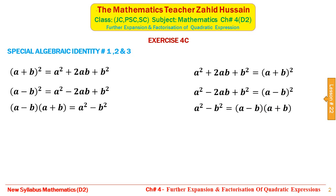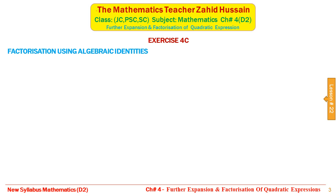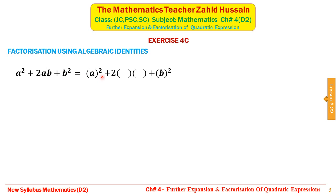For factorization using the first algebraic identity: given an expression a² + 2ab + b², we write the first term as a perfect square, then write plus 2 with two empty brackets, then write the third term as a perfect square. In the first bracket we write the term under the first square, in the second bracket the term under the second square. This gives us the expression as (a + b)², so the factors are (a + b)².